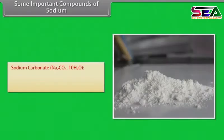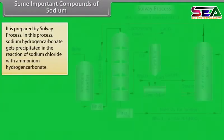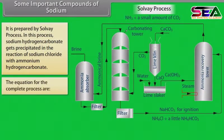Another name of sodium carbonate is washing soda. It is prepared by the Solvay process. In this process, sodium hydrogen carbonate gets precipitated in the reaction of sodium chloride with ammonium hydrogen carbonate.